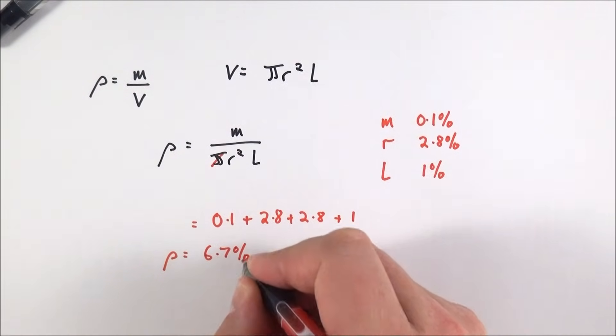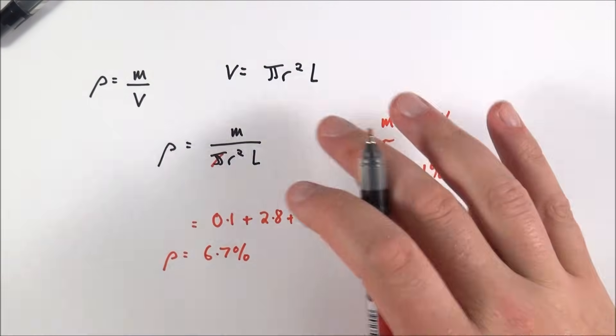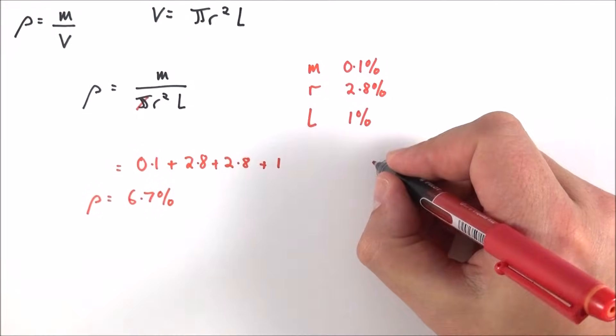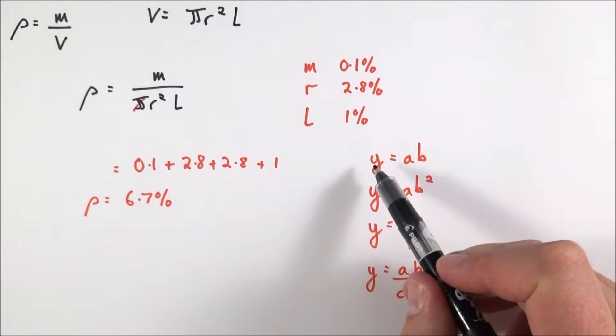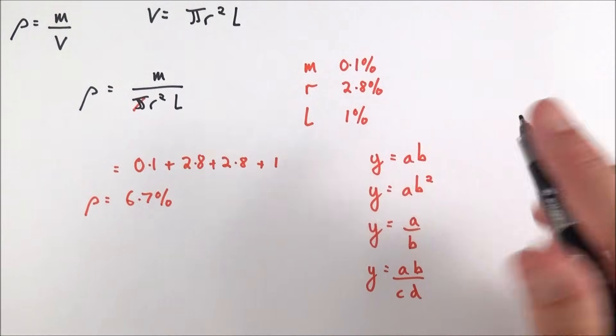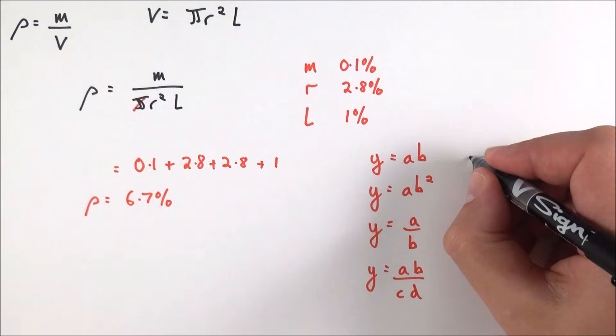This is just following some simple rules, so we can write these down as follows. If y is equal to a times b and we know the uncertainties in a and b, then the total uncertainty in y is just going to be equal to the uncertainty in a added to the uncertainty in b.